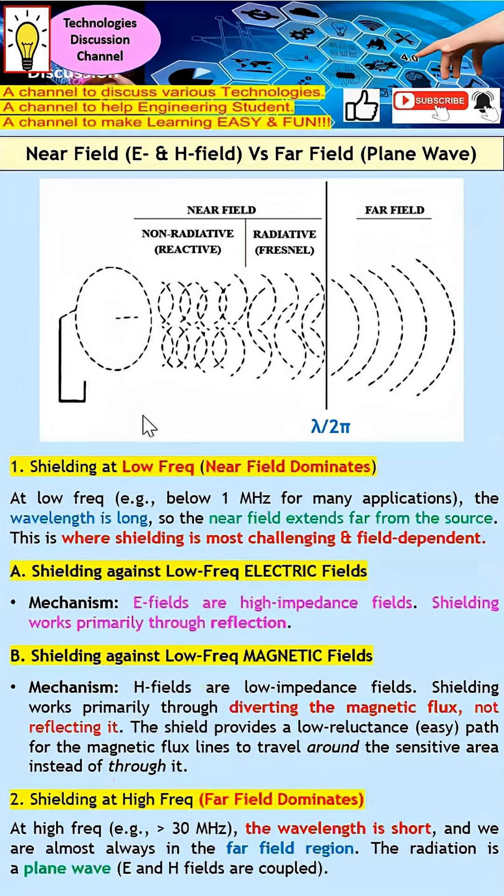Next, I'd like to discuss how we can shield at low frequency. At low frequency, let's say below 1 MHz, the wavelength will be very large, and this line will move further right. Therefore, at low frequency, the near field will be dominated.